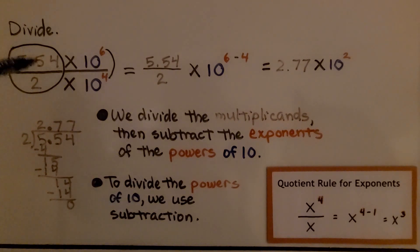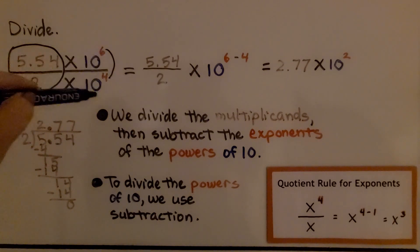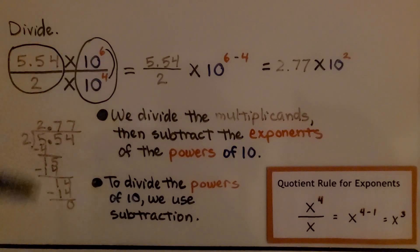We divide the multiplicands, then subtract the exponents of the powers of 10. So to divide the powers of 10, we use subtraction.